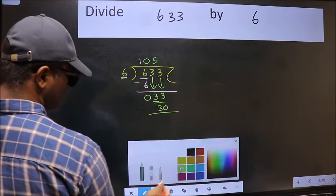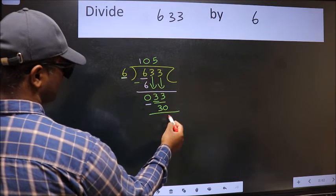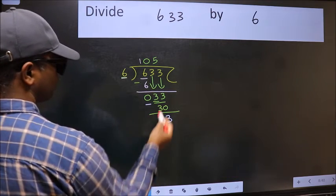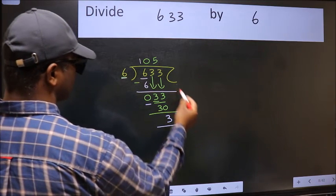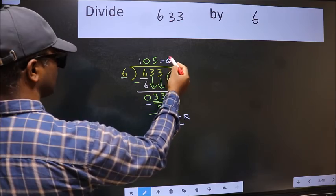Now we should subtract. We get 3. No more numbers to bring it down. So we stop here. This is our remainder and this is our quotient.